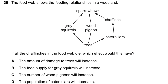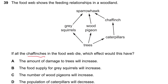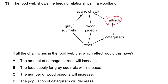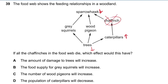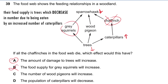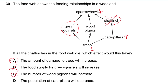Question 39: The food web shows feeding relationships in a woodland. If the birds in the food web die, caterpillars will be eaten less and will increase in number; trees will then decrease because caterpillars eat them more. The amount of damage to trees will increase — this is true. The food supply for grey squirrels will not increase; wood pigeon numbers are unrelated; caterpillar population will not decrease — it will increase. Answer is A.